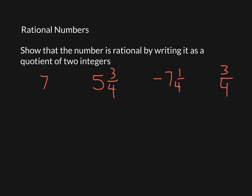So this first one, 7, is going to just be 7 divided by 1. Second one, 5 times 4 plus 3, that's going to give me 23 over 4. It's a rational number. Doesn't matter if it's a negative, but 7 times 4 plus 1 is going to give me 29. It's a rational number. And 3 fourths is a rational number already.